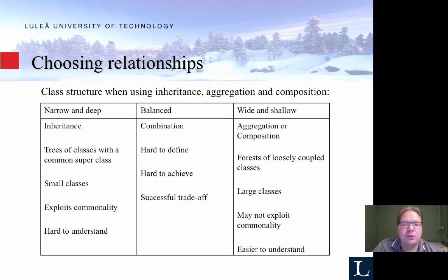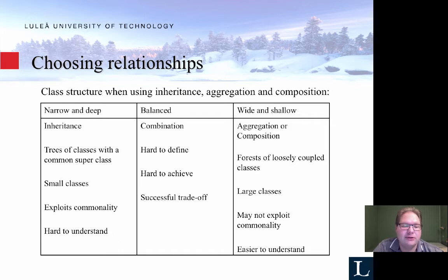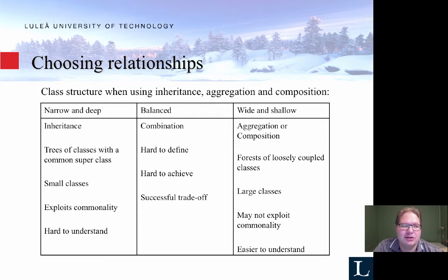To give a quick view of different design methodology implications: narrow and deep means you're using inheritance, with parents and children resulting in trees of classes. You end up with small classes, a lot of reusability, and you exploit commonality. But it becomes difficult to understand and easy to break if someone changes something in the parent. If you do want to change the common behavior it's also quick — it's easy to change the functionality for a lot of children at one time.